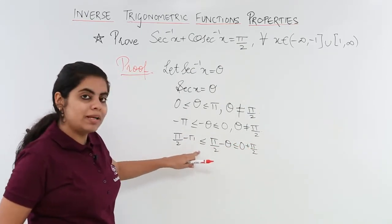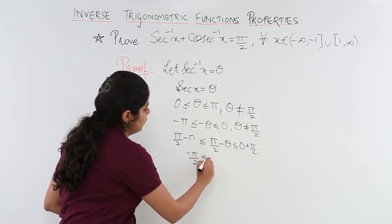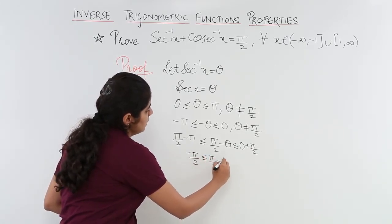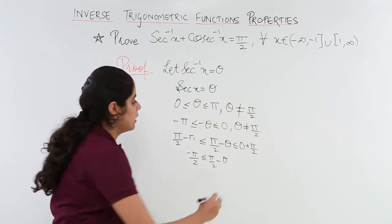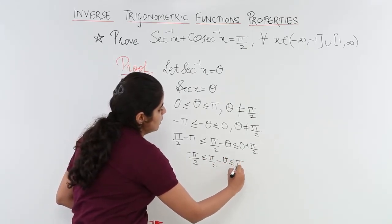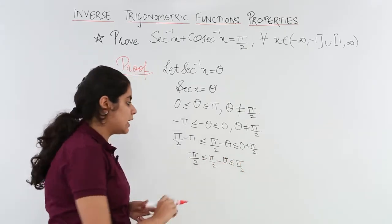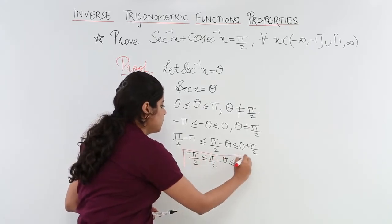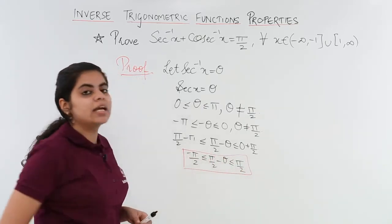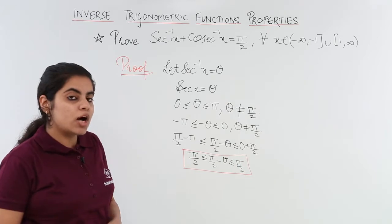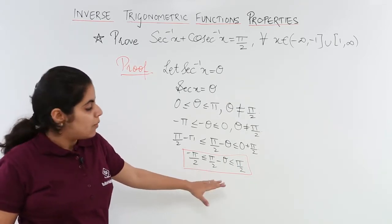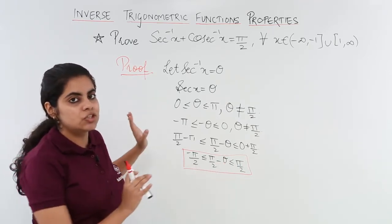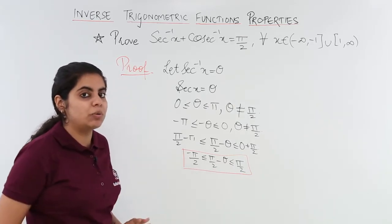π/2 - π is -π/2. So I have -π/2 < π/2 - θ < π/2. Things should be kept in a big bracket, in a box to refer to them later on. π/2 - θ range is found out, interval is found out. What is the next step?